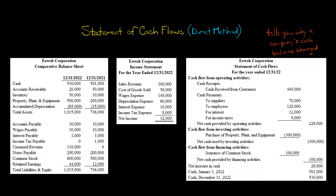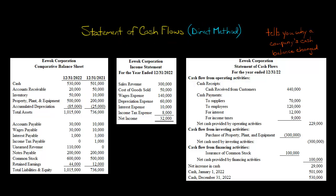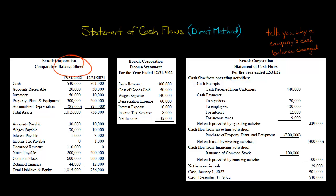Either method that is used, the basic idea behind the statement of cash flows is you're trying to figure out why a company's cash balance changed over time. That's the same whether you use the direct method or indirect — we're trying to figure out why the cash balance changed. It's not just about figuring out how much cash the company has, because you could just look at a company's balance sheet for that.